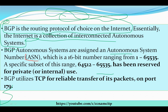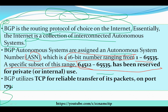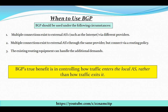The ASN is a 16-bit number ranging from 1 to 65,535. A specific range, from 64,512 to 65,534, has been reserved for private or internal use. BGP utilizes TCP for reliable transfer of its packets on port number 179. If it wants to send or forward packets reliably, it will use port 179.